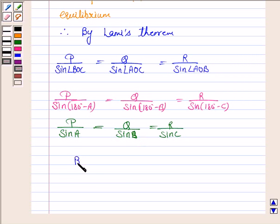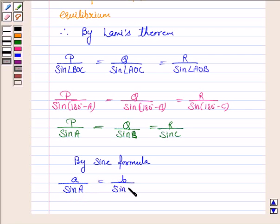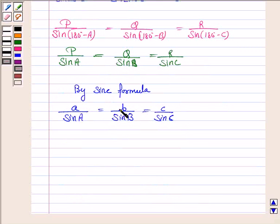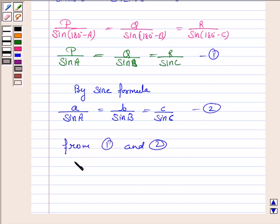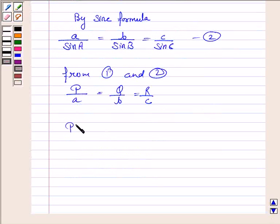Now, also by the sine formula, we have a upon sine A is equal to b upon sine B is equal to c upon sine C, where a, b, c are the sides of the triangle ABC. Let's name this equation 1 and this equation 2. From equations 1 and 2, we have P upon a is equal to Q upon b is equal to R upon c. So we have P is to Q is to R is equal to a is to b is to c, and this is what we had to prove.